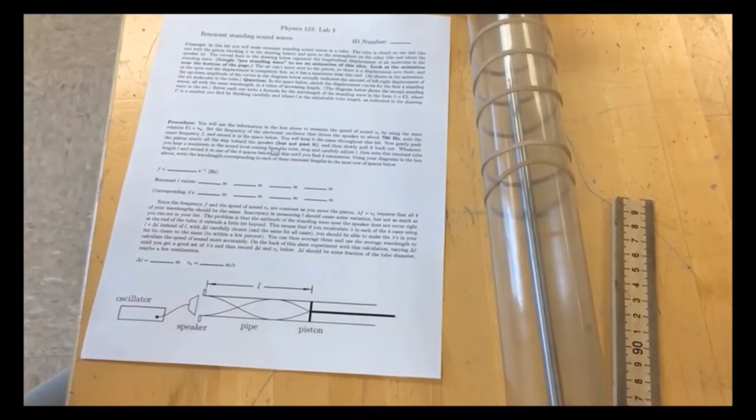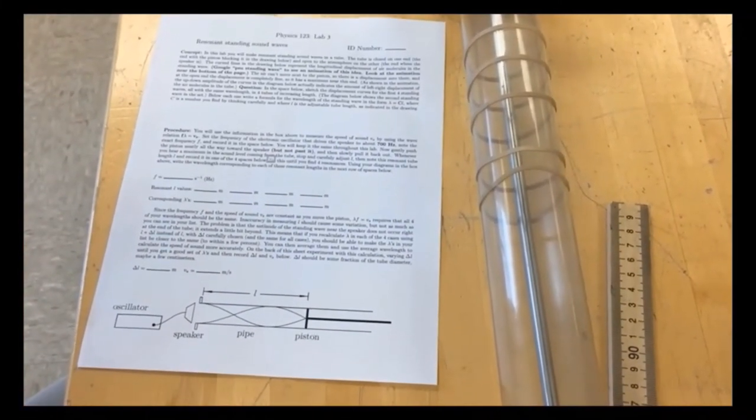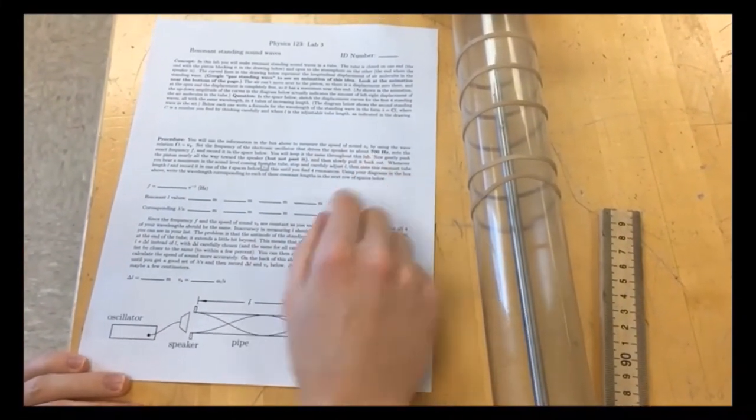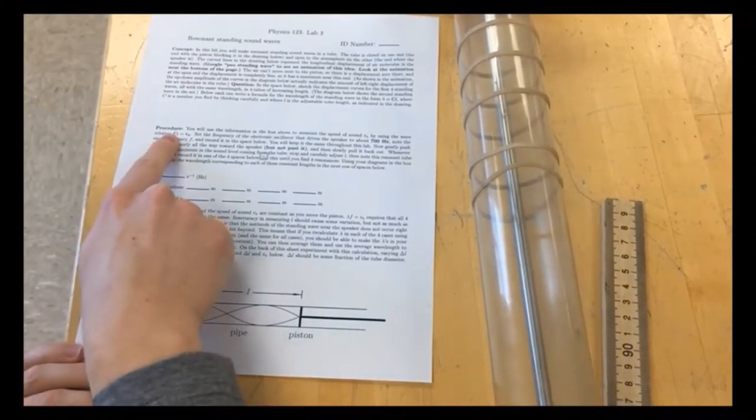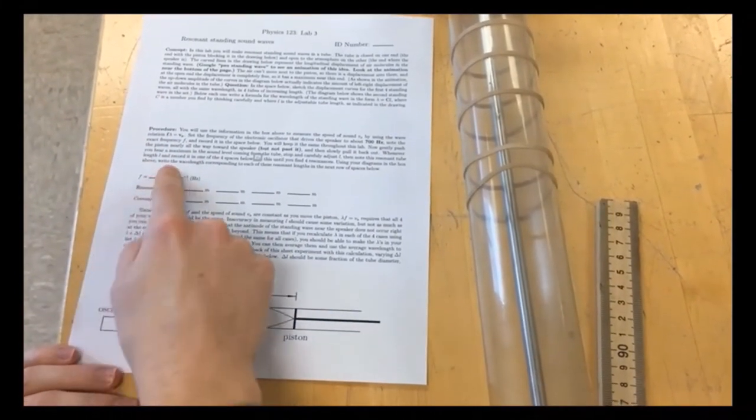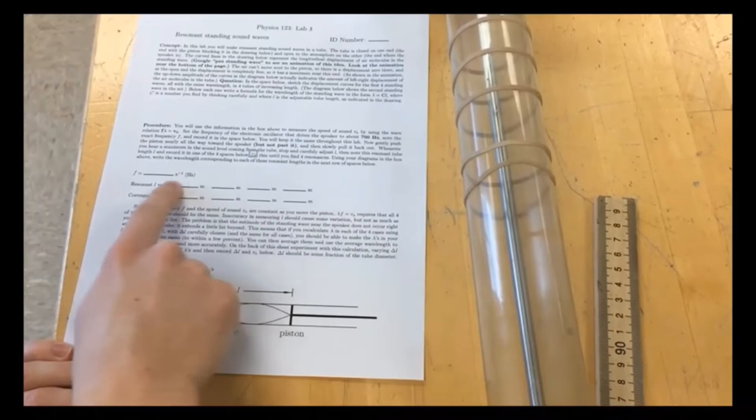For this part, in finding the wavelength, it's pretty straightforward. You just use the formula, velocity equals frequency times wavelength. The frequency should have recorded, and then we just recorded these L values.